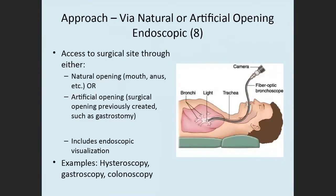Approach value 8 is also used for an approach via natural or artificial opening, but in this case an endoscope is used. Therefore, you have endoscopic visualization through the camera on the scope. Examples include hysteroscopy, where the scope is inserted through the vagina into the uterus; gastroscopy, where the scope is inserted through the mouth into the stomach; and colonoscopy, where the scope is inserted into the anus into the colon.